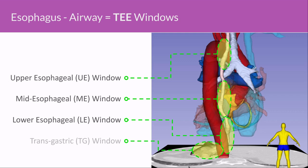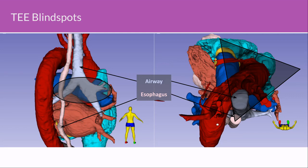These are the blind spots. One blind spot is caused by the main stem bronchi, which limits imaging of the distal ascending aorta and branch PAs. We can image the right PA to some extent, but are very limited with the left PA. In the upper esophagus, the trachea creates a blind spot that significantly limits our ability to image the proximal arch and distal ascending aorta in most patients.